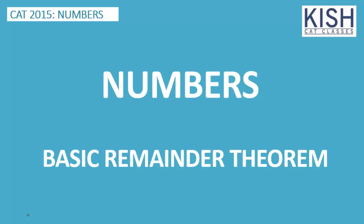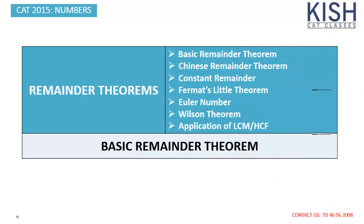If you have gone through that video, you probably might have clearly understood that there are about eight to nine topics which are very important for CAT. However, you just need to focus on four or five areas. One of them is basic remainder theorem, and the weightage given to basic remainder theorem is very very high. Among all the remainder theorems in CAT, the most important is basic remainder theorem, followed by Chinese remainder theorem and constant remainder theorem. This video is completely dedicated to basic remainder theorem.